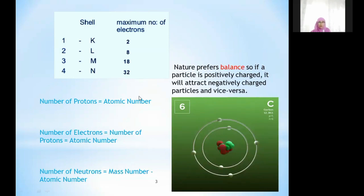Now why is an atom neutral? Because nature prefers balance. For every positively charged particle there is a negative charge particle and this process is reversible also.